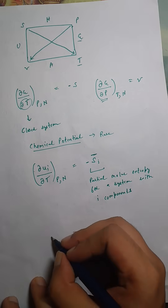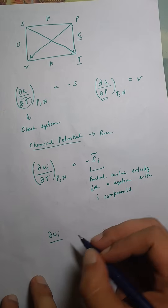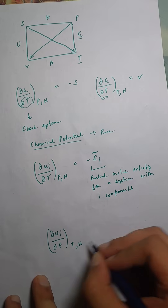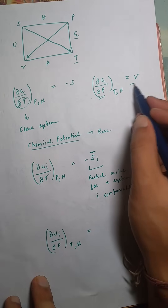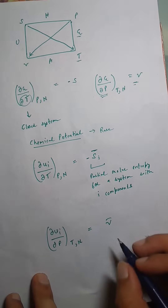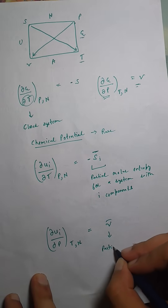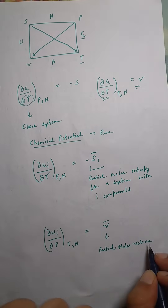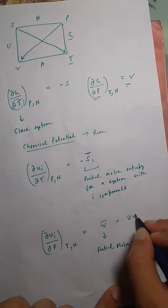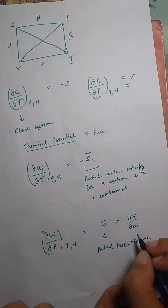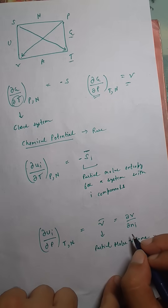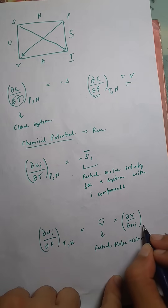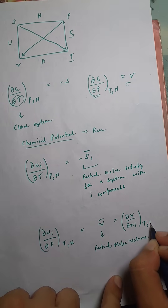Similarly, how does chemical potential vary with pressure at constant temperature for a closed system? The denominator is P, opposite of P is V, arrow goes from P to V — same direction — so (∂μ_i/∂P)_{T,n} = V̄_i, the partial molar volume, defined as (∂V/∂n_i) at constant T and P.